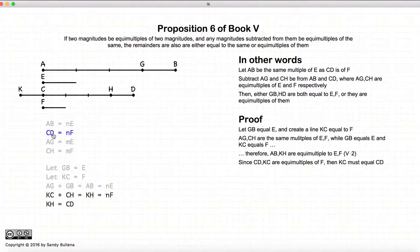Now CD. Now CD is equal to NF. Well, KH is also equal to NF, so consequently KH and CD are equal. KH, CD, they are equal.